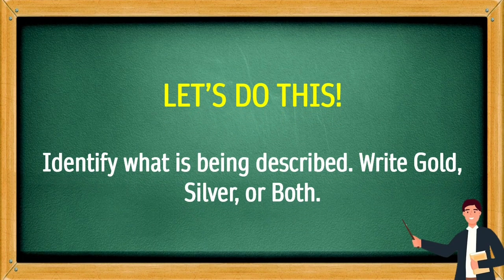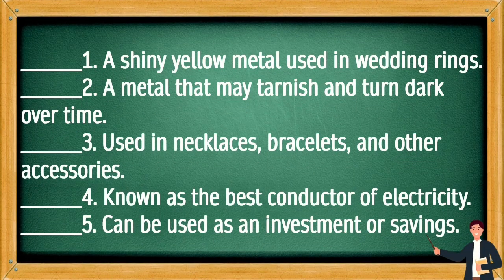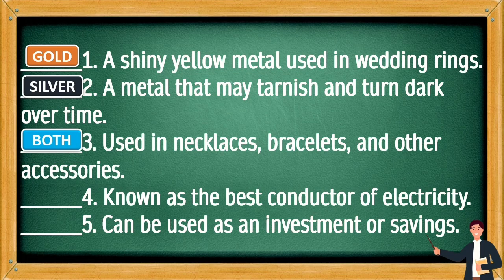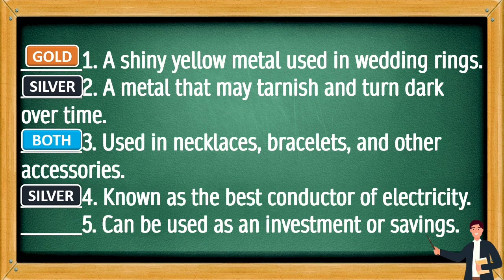Let's do this! Identify what is being described — write Gold, Silver, or Both. A shiny yellow metal used in wedding rings — this is gold. A metal that may tarnish and turn dark over time — this is silver. Used in necklaces, bracelets, and other accessories — this is both. Known as the best conductor of electricity — this is silver. Can be used as an investment or savings — this is gold.